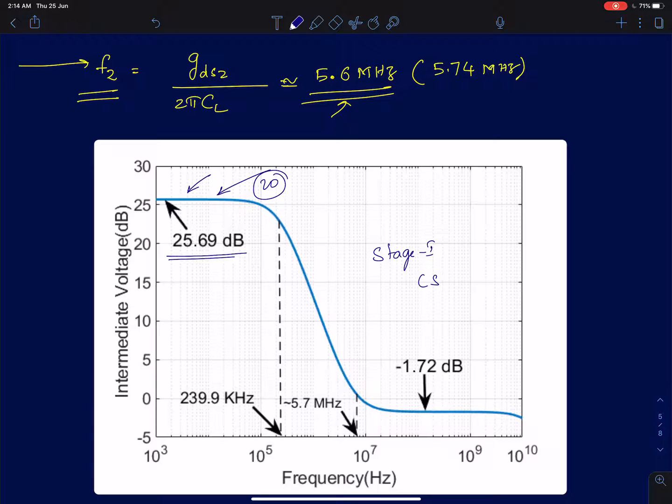And the pole, we just moved 3 dB from the DC gain and we get the pole at 240 kilohertz. And the zero happens to be at 5.7 megahertz. To measure the zero we just move 3 dB above the constant value, the steady state value, and then locate the zero and that comes to around 5.7 megahertz.